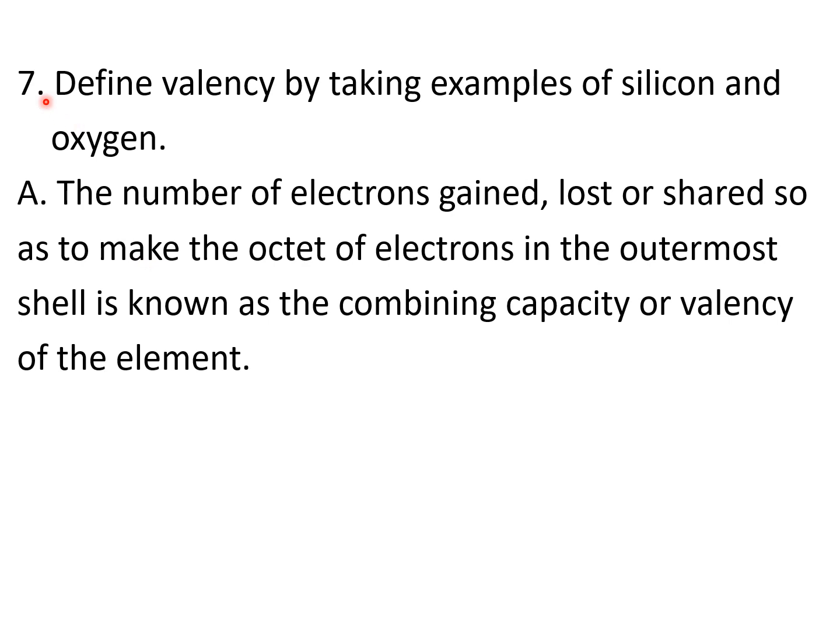Then question number 7: Define valency by taking examples of silicon and oxygen. The number of electrons gained, lost, or shared so as to make the octet, that means group of 8 electrons in the outermost shell, is known as the combining capacity or valency of the element. This is the definition which you have to memorize and practice writing.